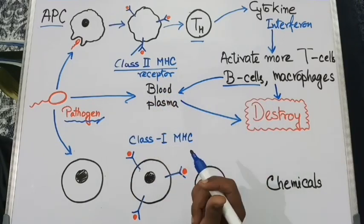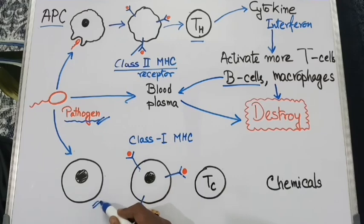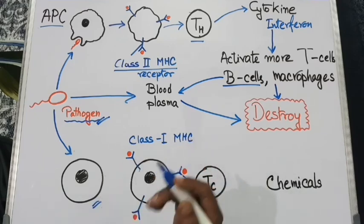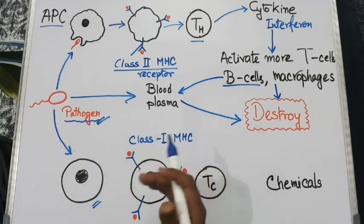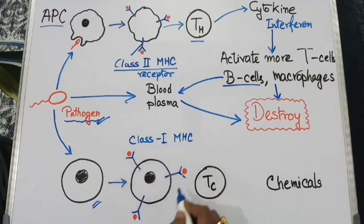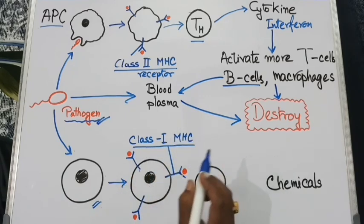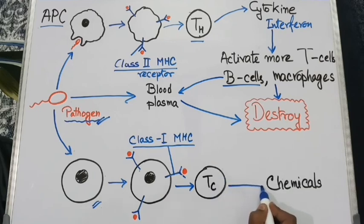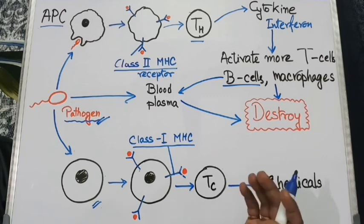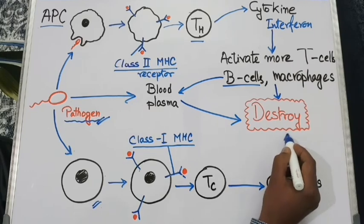Now let's see what happens when a pathogen enters a general nucleated body cell. The cell tries to destroy the pathogen using lysosomes and then expresses the antigenic portion on its cell membrane using a class 1 MHC molecule. This class 1 MHC molecule stimulates cytotoxic T lymphocytes (TC cells), which secrete chemicals that destroy the pathogen-carrying body cell, thus leading to destruction of the pathogen.